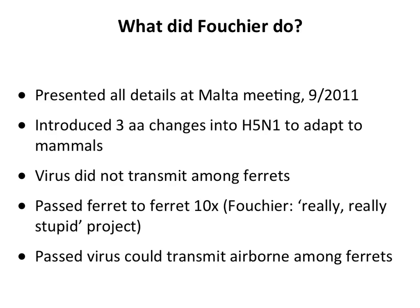Fouchier introduced three amino acid changes into a wild isolate of H5N1 to allow it to adapt to mammals. That virus did not transmit among ferrets by air. So he then passaged it manually from ferret to ferret — putting virus in the nose, letting them incubate, doing a nasal wash, and infecting new ferrets. He calls this 'a really, really stupid project.' After 10 passages, that virus was now able to transmit through the air among ferrets.